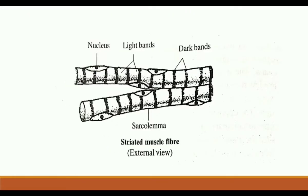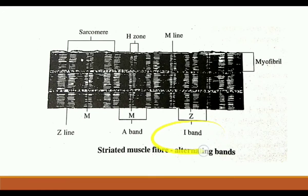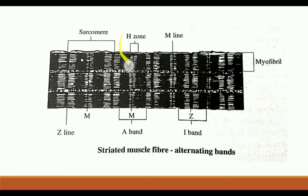The external view of a muscle fiber shows alternate dark and light bands, known as stripes or striations — which is why they are called striated or striped muscles. The light bands are called isotropic bands or I-bands. The dark ones are called anisotropic bands or A-bands. The narrow zone bisecting each I-band is known as the Z-zone or Krause membrane. The zone bisecting the A-band is called the H-zone or Henson's zone.